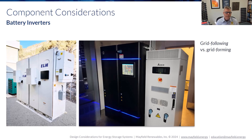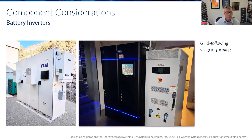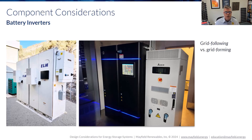Grid following versus grid forming is an important aspect of understanding what your inverter can actually do. Grid following means exactly what it says — it follows the grid, mimicking whatever the utility provides. This is what happens with grid-direct inverters; those inverters cannot create their own sine wave and can only follow what the grid supplies. We do have battery systems that are grid following, and they're only there to provide grid support services like demand charge management or energy arbitrage.